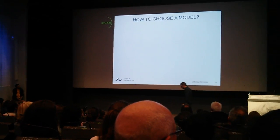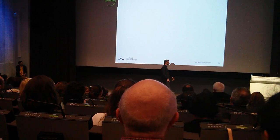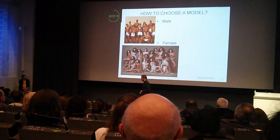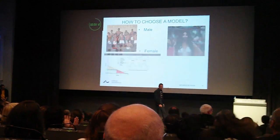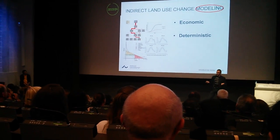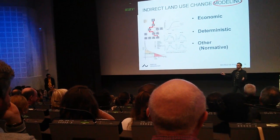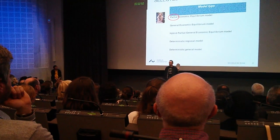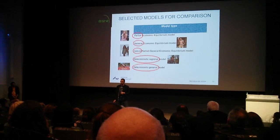How to choose a model? We need to choose a model according to its characteristics — classify the model, and according to what we need, we choose. Going back to the IP model: we could classify male or female, and we'd be done. But we also have another way to classify models. We have economic models and deterministic models, which are based on cause-and-effect relationships. We only use economic models and deterministic models — in particular, partial, general, and hard-link. And then we have deterministic regional models and deterministic general models.